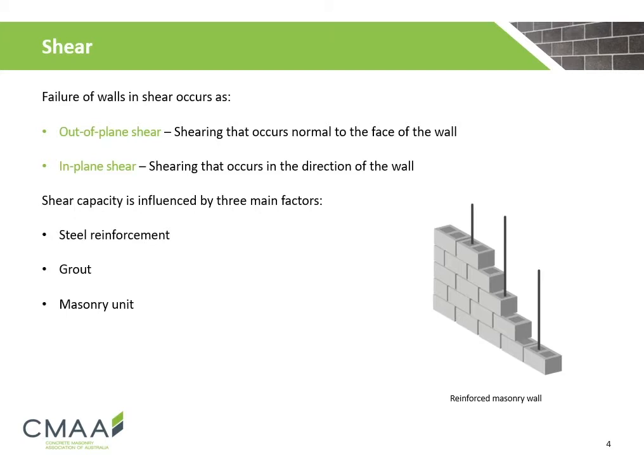Reinforced masonry walls can be subject to two different shear actions: out-of-plane shear, which is shear that occurs normal to the face of the wall, and in-plane shear, which is shear that occurs in the direction of the wall. Shear capacity is influenced by three main factors: steel reinforcement, grout, and the masonry unit.